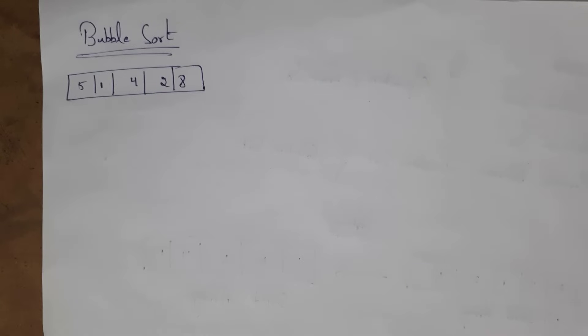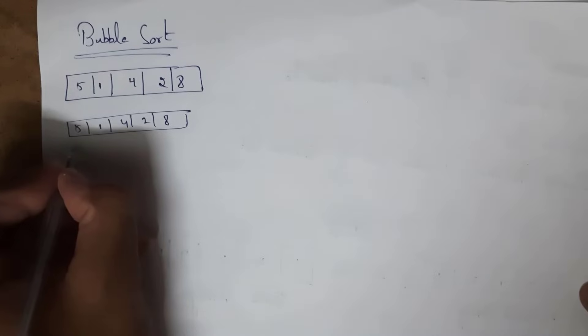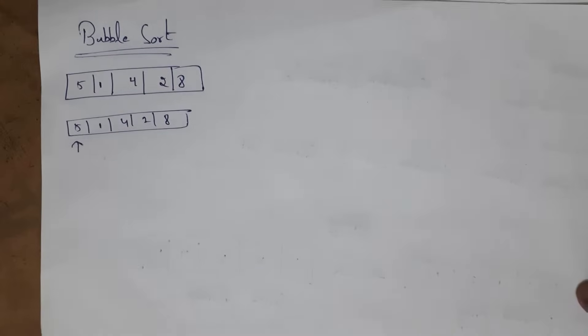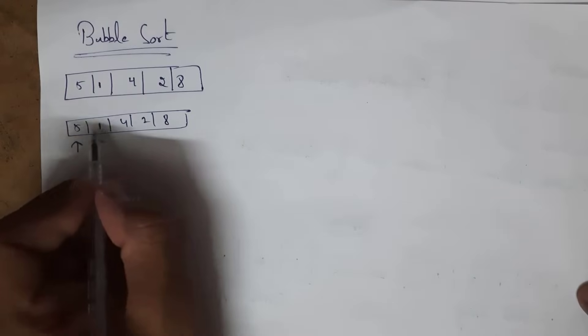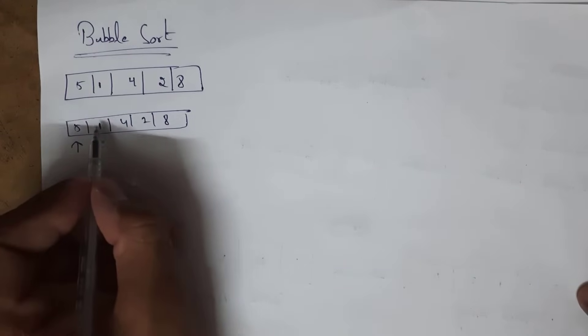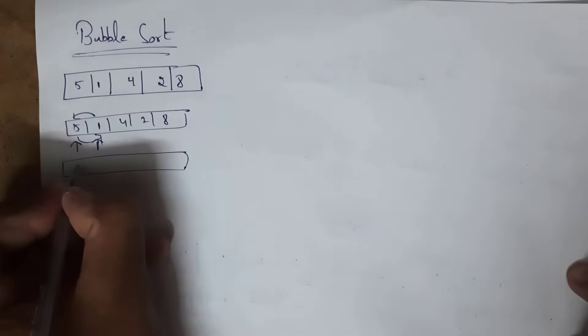Now with the unsorted array, we need to sort using bubble sort starting from the first element, checking each element whether it is in correct position. The array is: five, one, four, two, eight. Place cursor at the first position. First element is five, next is one. Both are not in proper order because one must be first and five should follow. So swap these adjacent elements — swap five and one.